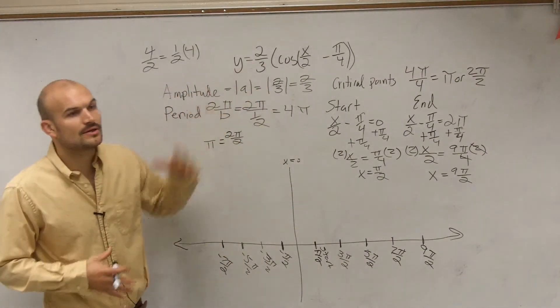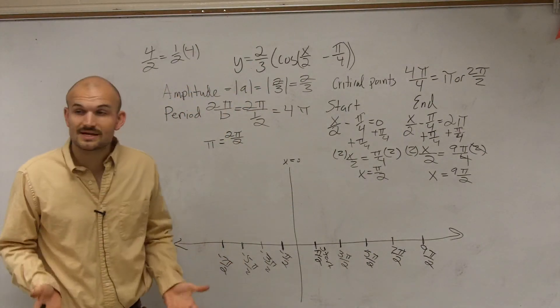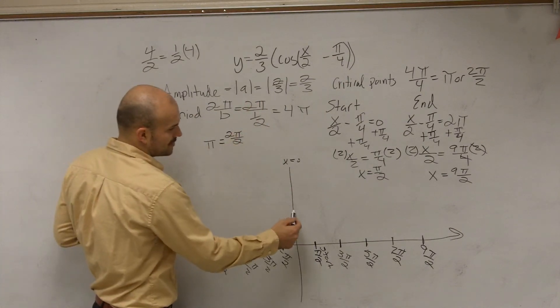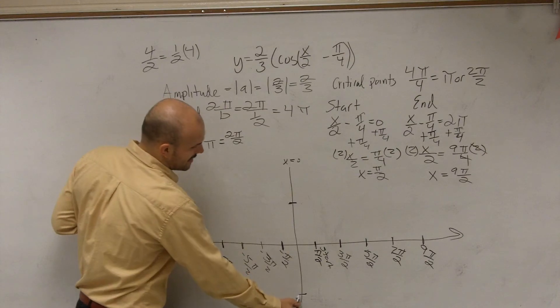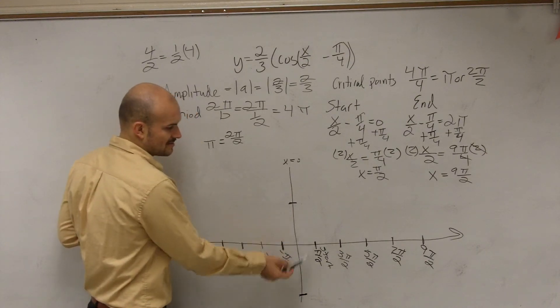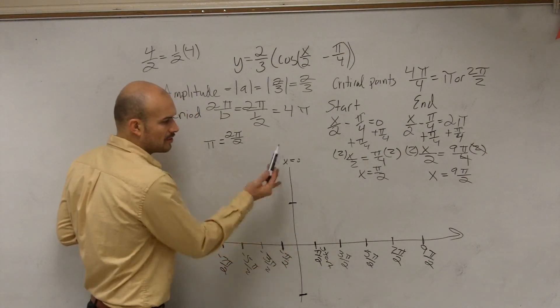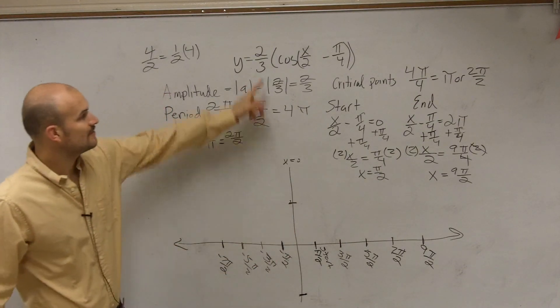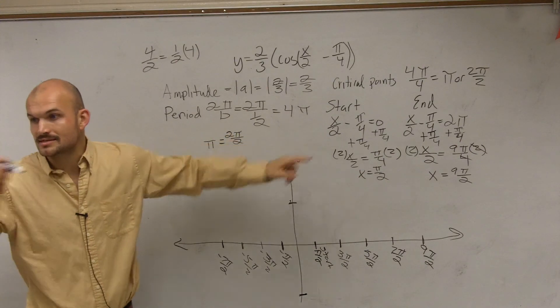So now we need to look at our cosine graph and say, what does the cosine graph look like? Remember, our cosine graph always had an amplitude of 1 and negative 1. That was its half distance. So therefore, if we didn't have a vertical translation, we could go up to 1. However, in this graph, our amplitude is not 1 anymore. It's 2 thirds.